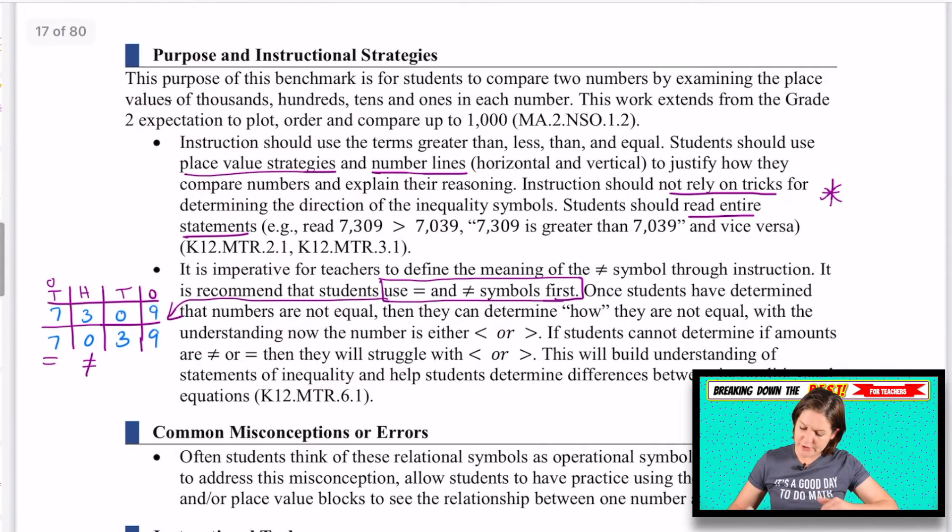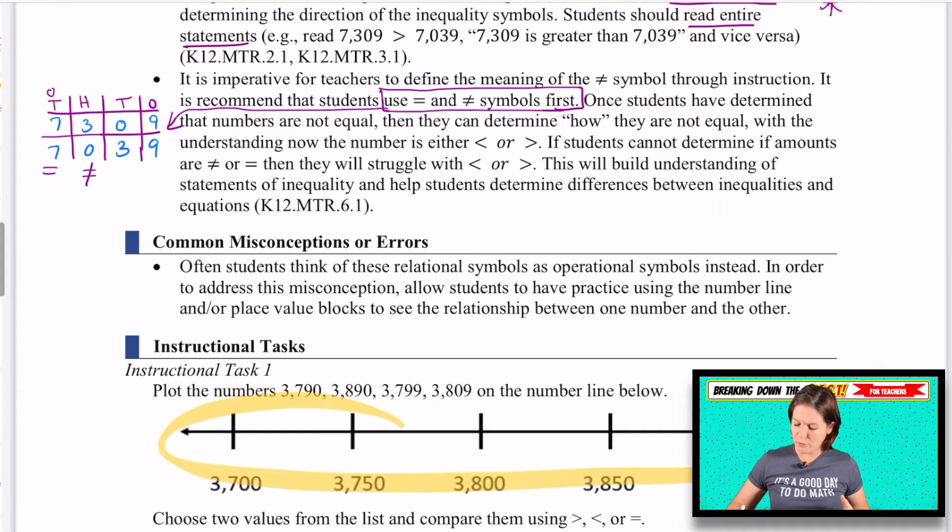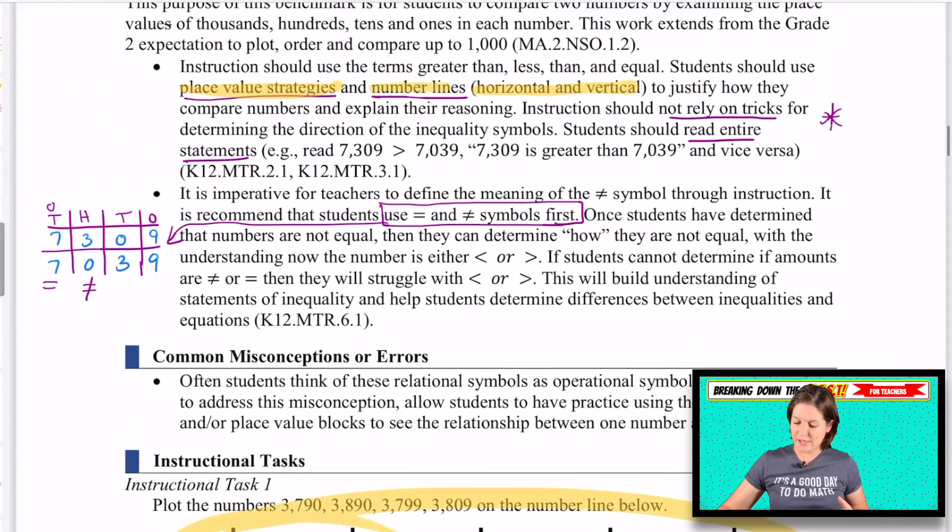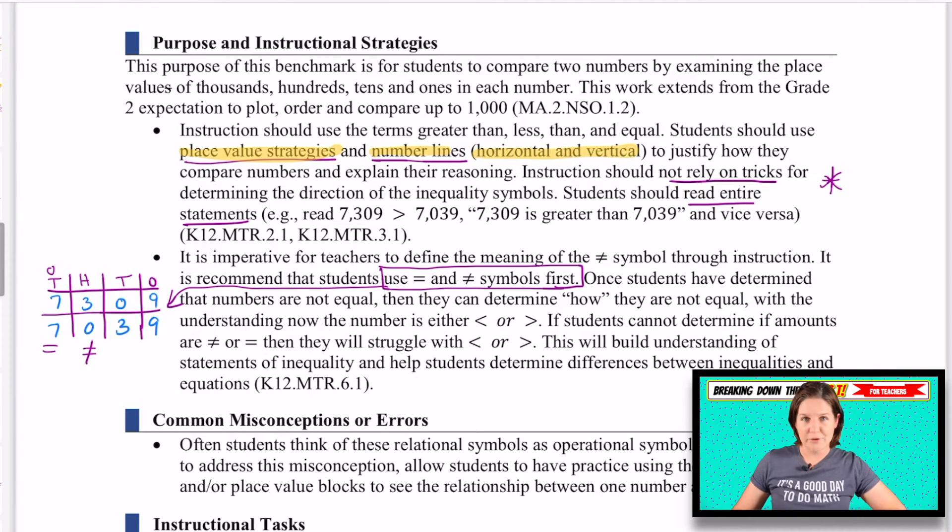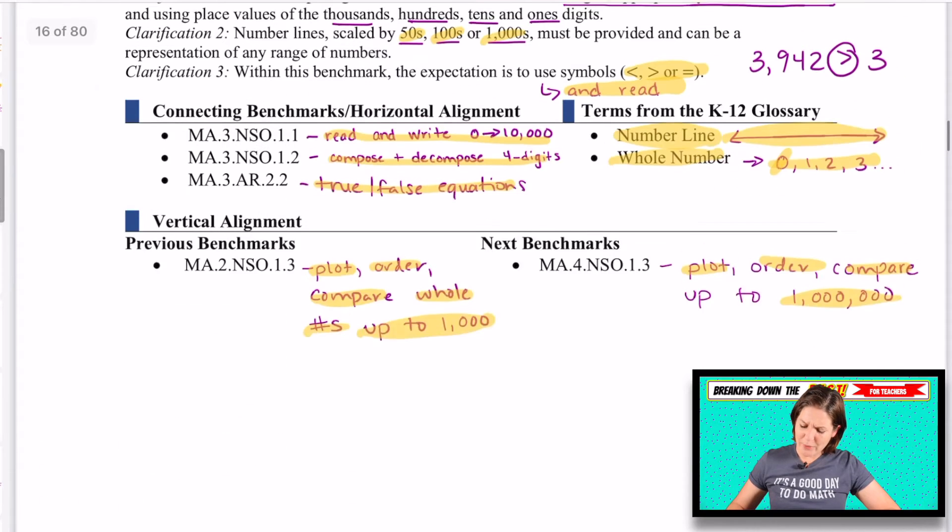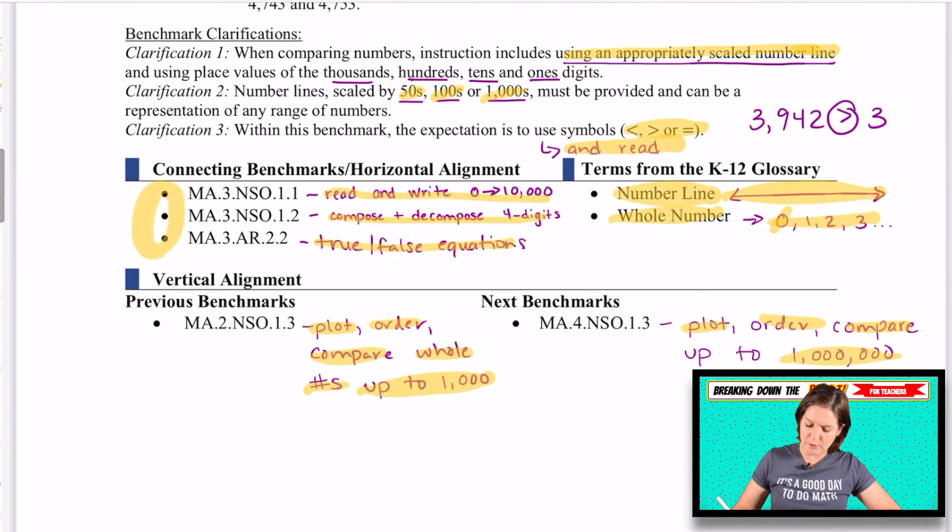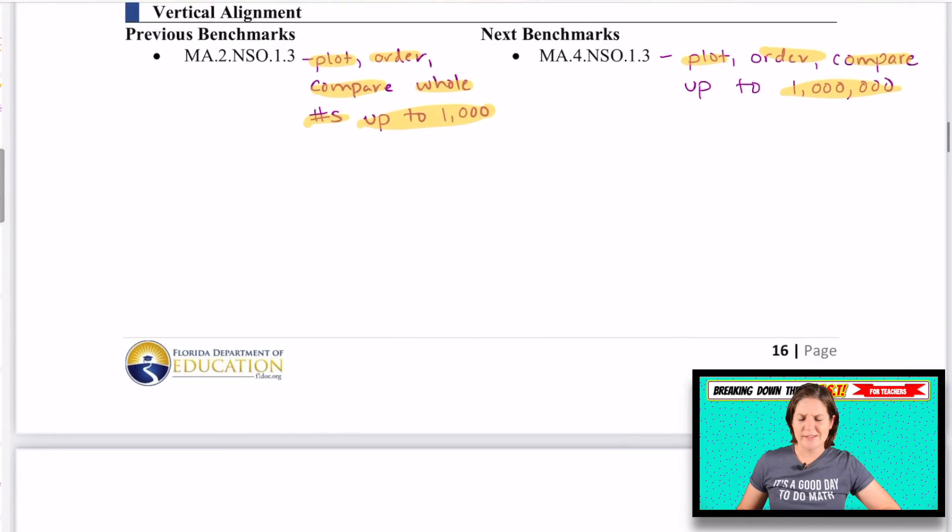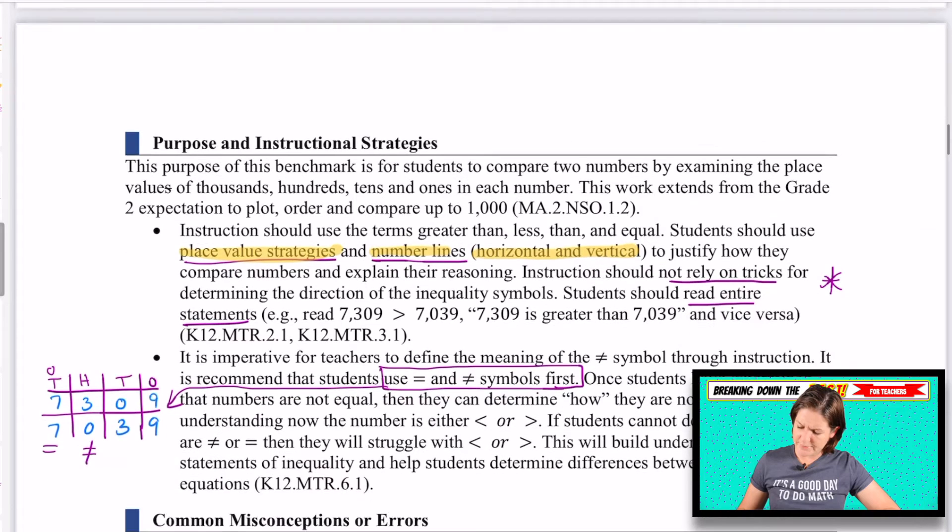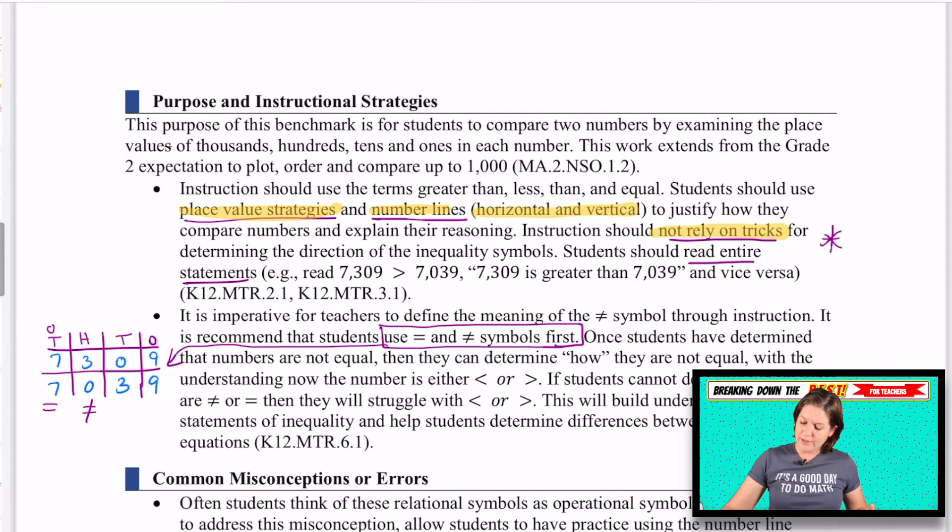What jumped out at me here? There's a couple things actually. Making sure that we're using place value strategies with our number lines. I think this is new. I don't think I noticed this before, but horizontal and vertically. So all the examples I'm seeing have a horizontal number line, but vertically, when we get to measurement, there might be some vertical representation there too. Instructions should not rely on tricks.